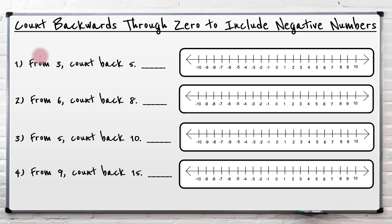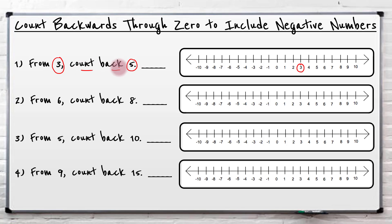So what have we got here first off? From three we need to count back five. We've got this useful number line which has positive numbers and it has negative numbers. When we're doing this question, all we literally need to do is find where the number three is on the number line. When it says count back, that means we're going down the way — it's getting smaller. It's like saying subtract five.